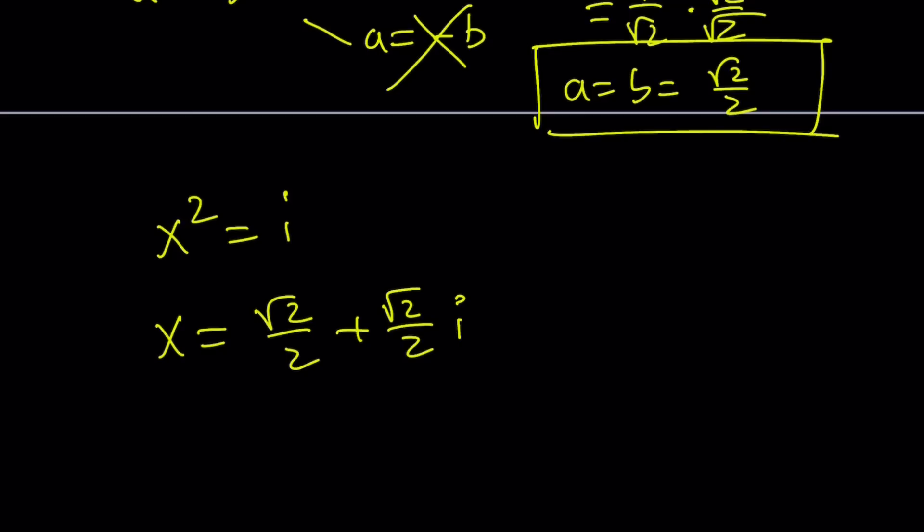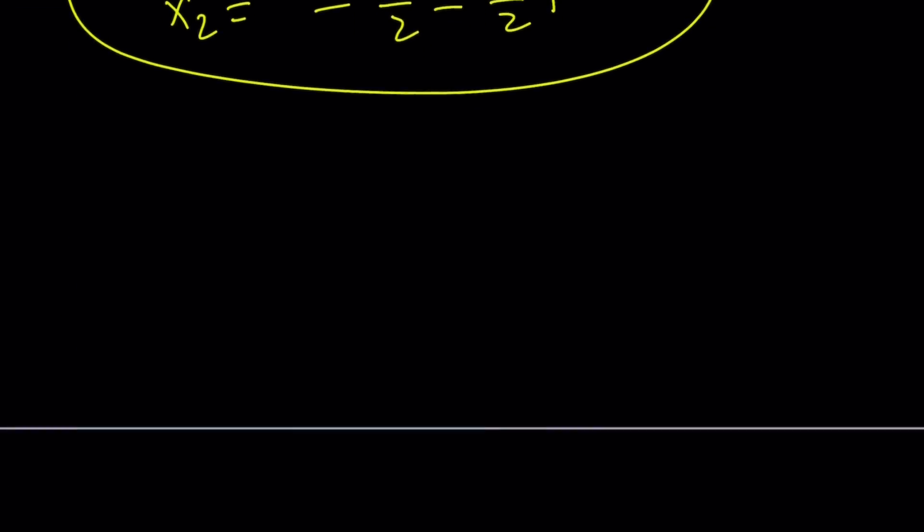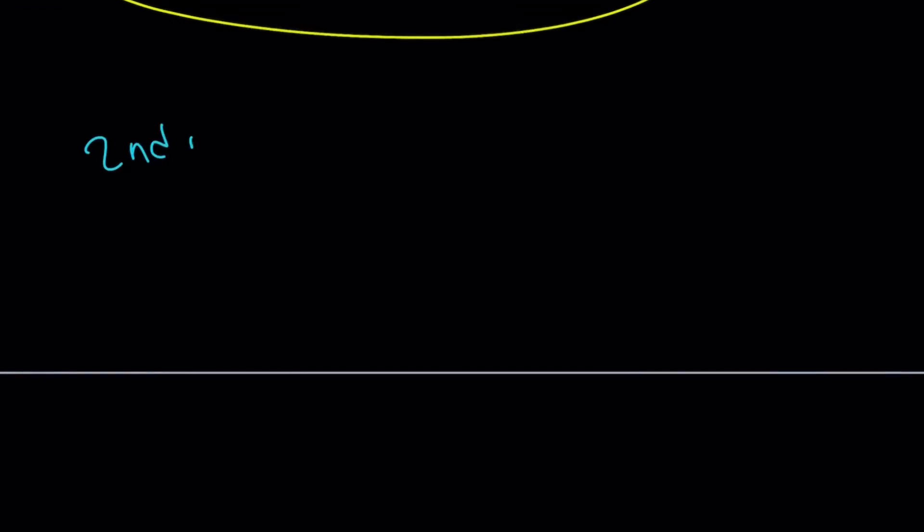But this is just one of the solutions because a complex number has two square roots. And the other one, let's call this x sub 1, x sub 2, is just going to be the opposite of this. Why? Because if you square opposites, you're going to get the same thing. Okay, make sense? Let's go ahead and talk about the second method real quick.